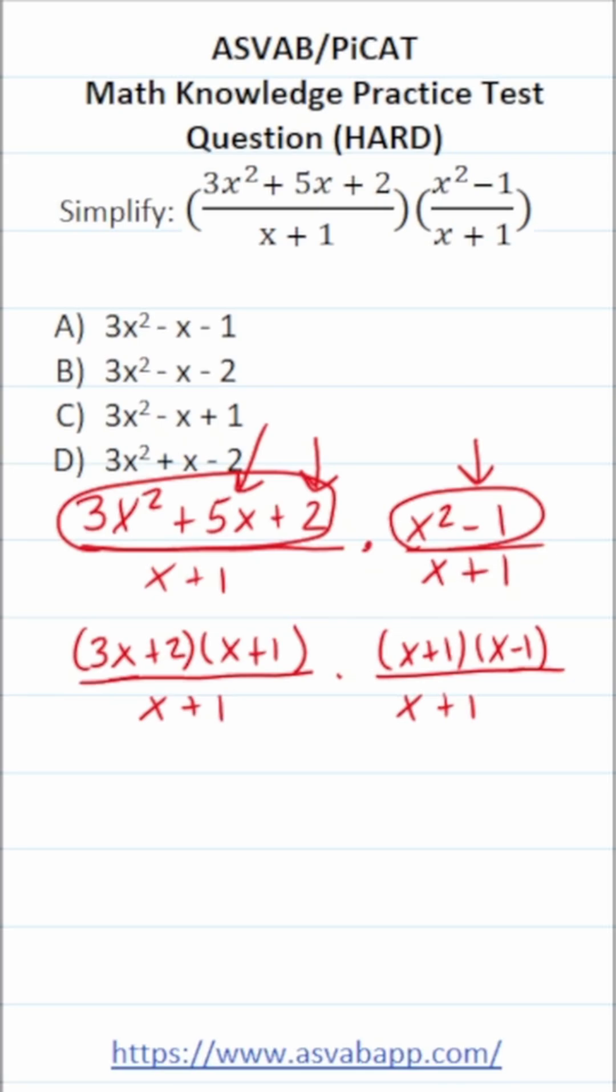We're going to treat this rational expression like a pair of fractions. And when you multiply two fractions, you just multiply straight across. So in doing that, we're just going to create one big expression here. Our denominator is going to become x plus 1, x plus 1. And our numerator is going to become 3x plus 2 times x plus 1 times x plus 1 times x minus 1.